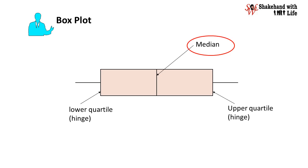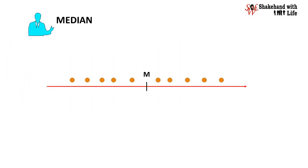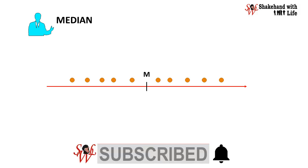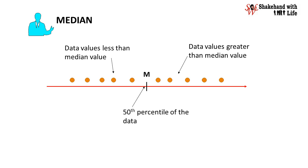The median is the point in the middle of the ascending or descending data set, below which lies half of the data values and above which lies another half. The median is that value of the variable which divides the group into two equal parts. One part comprises all values greater than the median and the other part contains values less than the median. The median is the 50th percentile of the data.